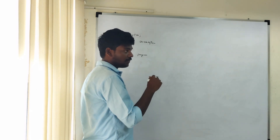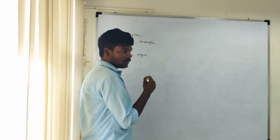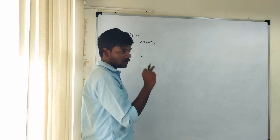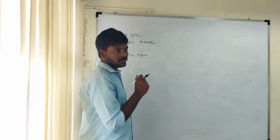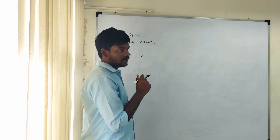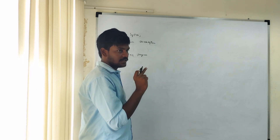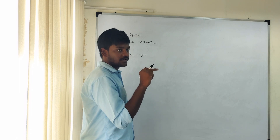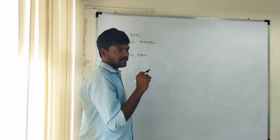First we need to specify the data type and then the variable name. A variable name must start with a character — a letter. That is one rule. We can also use an underscore symbol. Then I am taking a for loop to iterate from 1 to 90. The variable i starts from 1, goes up to 90, incrementing by 1 each iteration.